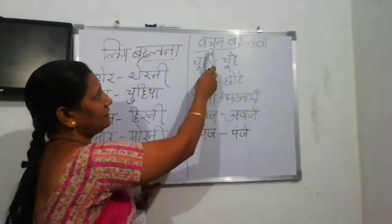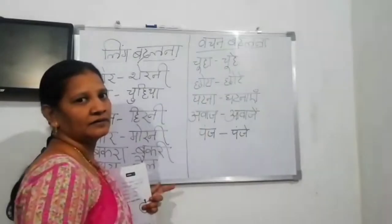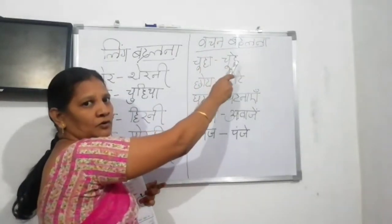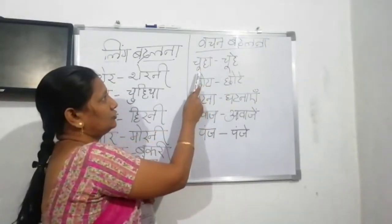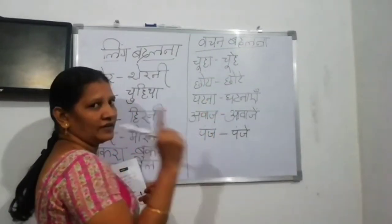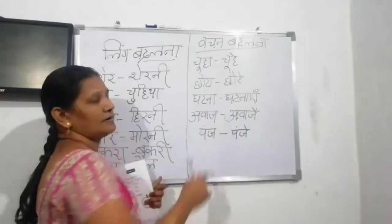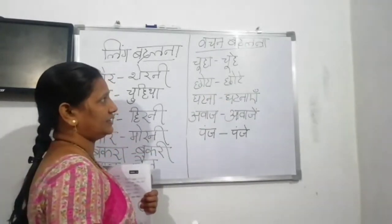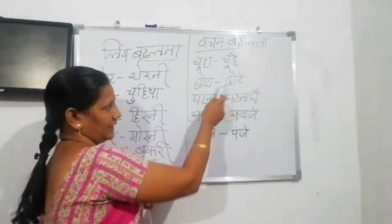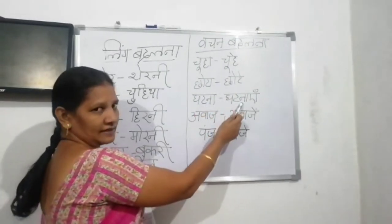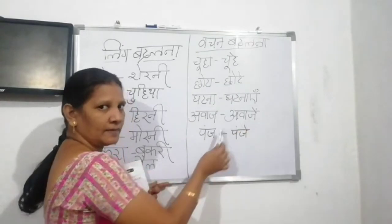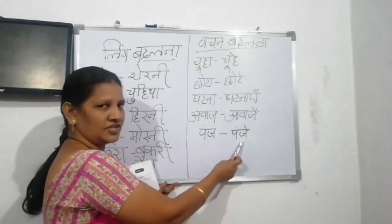Next: Vachan badalna. Vachan means singular and plural. Chooha — one rat (singular). Choohe — many rats (plural). Chota — Chote. Ghatna — Ghatnaayem. Aawaz — Aawazem. Panja — Panjay.